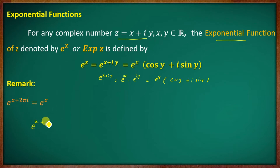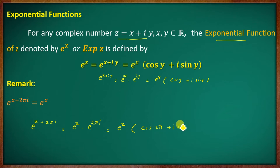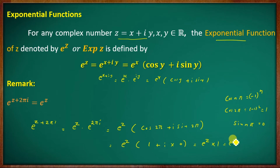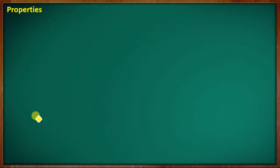e raised to (z + 2πi) equals e raised to z into e raised to 2πi, which equals e raised to z times (cos 2π + i sin 2π). Now cos 2π equals 1 and sin 2π equals 0, so this equals e raised to z into 1, which equals e raised to z. This shows the periodicity of the exponential function.